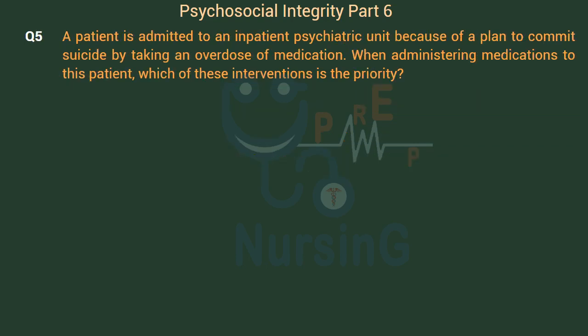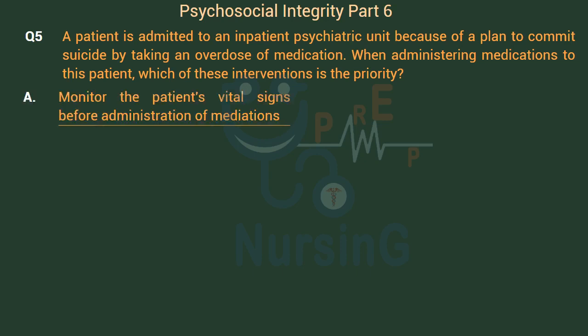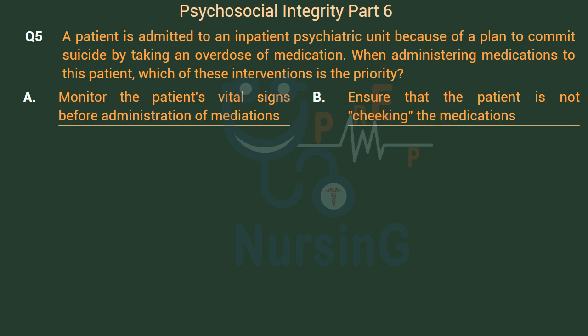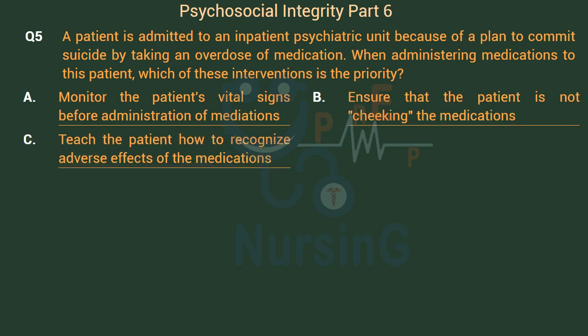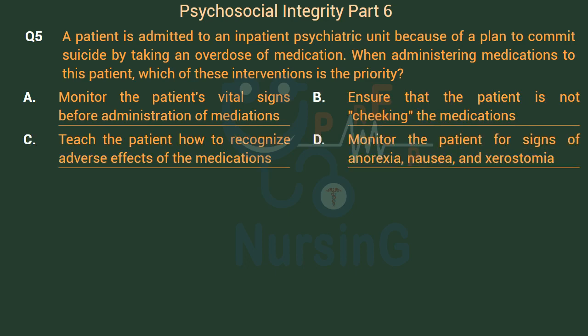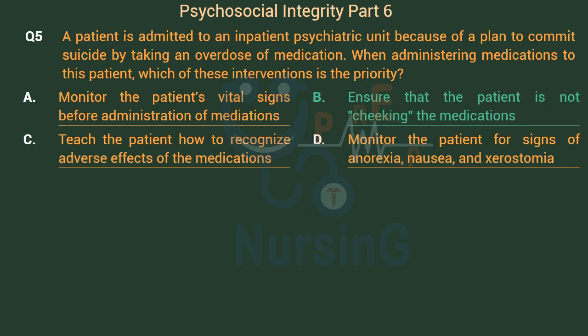A patient is admitted to an inpatient psychiatric unit because of a plan to commit suicide by taking an overdose of medication. When administering medications to this patient, which of these interventions is the priority? Option A: Monitor the patient's vital signs before administration of medications. Option B: Ensure that the patient is not cheeking the medications. Option C: Teach the patient how to recognize adverse effects of the medications. Option D: Monitor the patient for signs of anorexia, nausea, and xerostomia. The right answer is Option B — Ensure that the patient is not cheeking the medications.